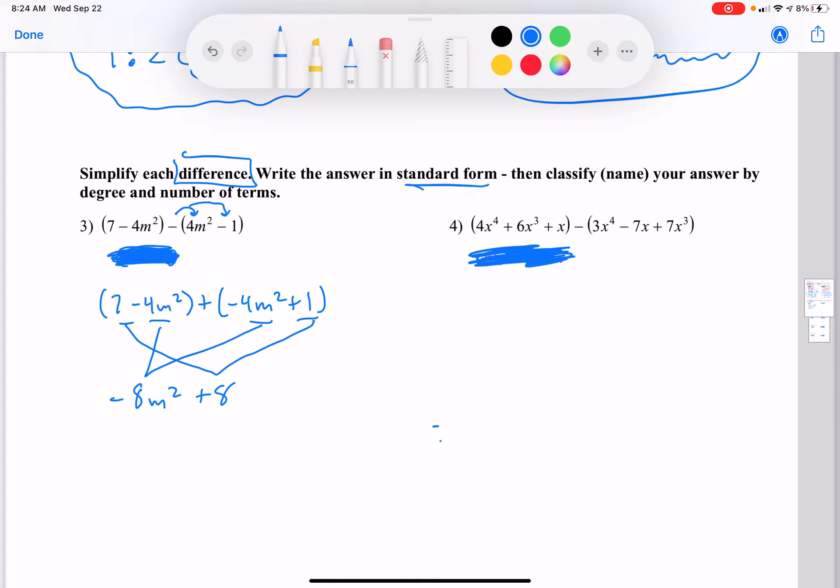So it's in standard form already because I wrote the biggest exponent first. And then I'm going to classify degree, biggest exponent, 2. Terms, there are two of them, 2. So it's a quadratic binomial.